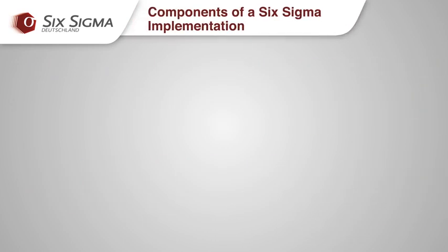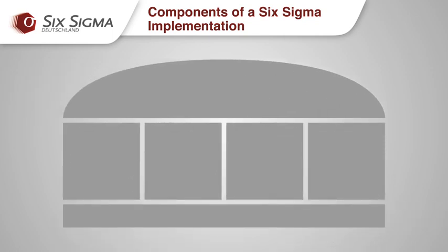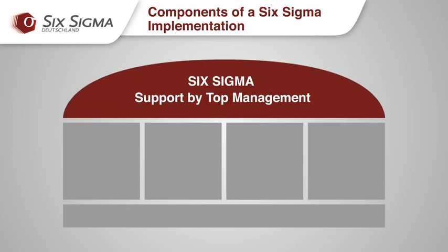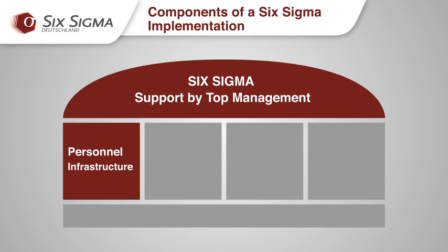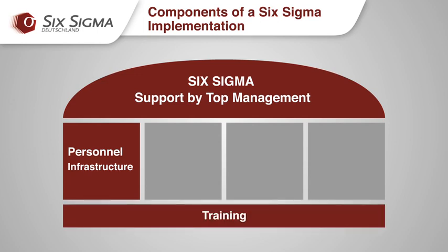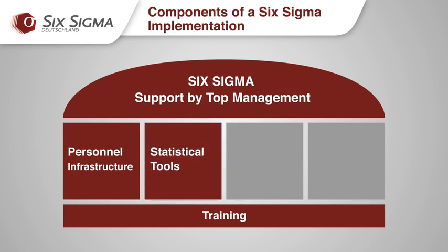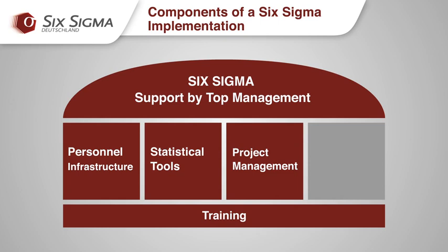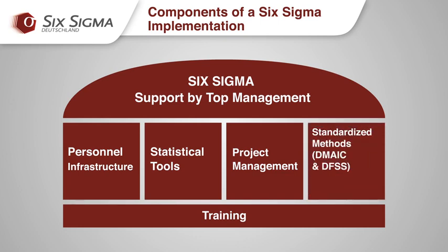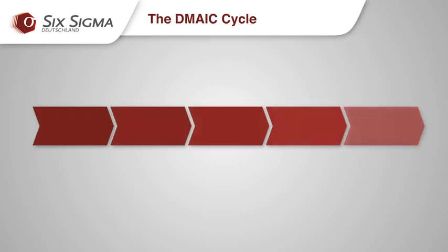The success of a Six Sigma implementation is dependent on several factors. As with any change methodology, the support of top management is of central importance. The creation of a Six Sigma infrastructure with qualified staff is critical for conducting improvement projects, especially in large organizations. To this end, it is essential to train a team of green belts and black belts who have mastered the use of Six Sigma tools, including statistical methods for verifying problem root causes. Knowledge of and experience in project management is also critical. A key element of project success is the standardized project approach in the form of the DMAIC cycle for improving existing processes. For developing new processes or products, there are methods such as Design for Six Sigma, DFSS or DMADV.